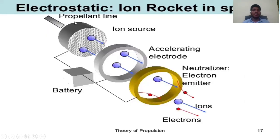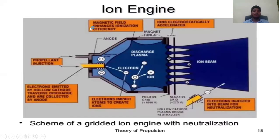Electrostatic ion rocket diagram — propellant line, ion source, accelerating electrode, neutralizer electron emitter. Blue color represents ions, red color represents electrons. Ion engine: magnetic field enhances ionization efficiency. Components include magnetic rings, anode, positive grid, negative grid, and ion beam. Discharge plasma — electron, ion, propellant atom. Propellant atoms are injected via propellant injection.